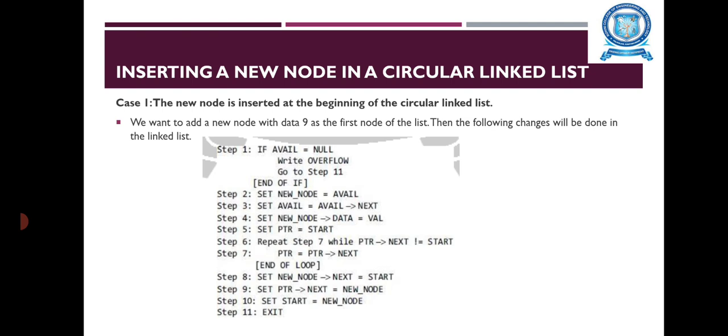In step 1, we first check whether memory is available for the new node. If the free memory is exhausted then an overflow message is printed. Otherwise, if a free memory cell is available, we allocate space for the new node, set its data part with the given value, and set its next part.